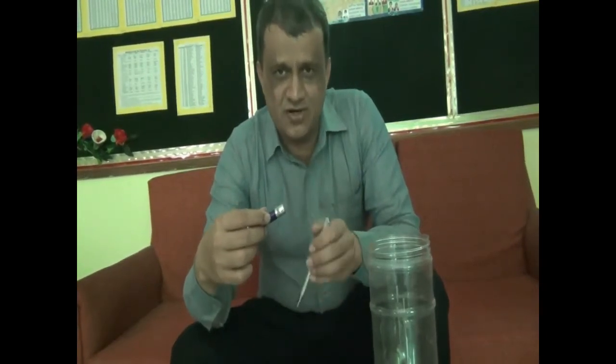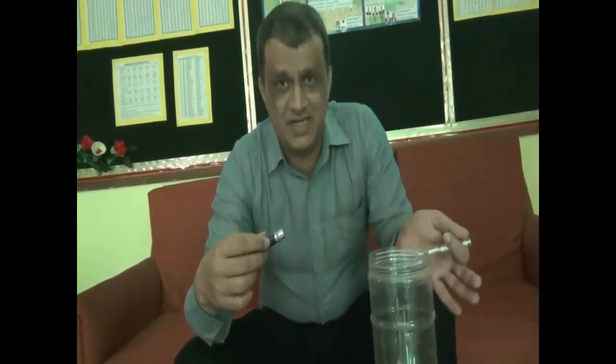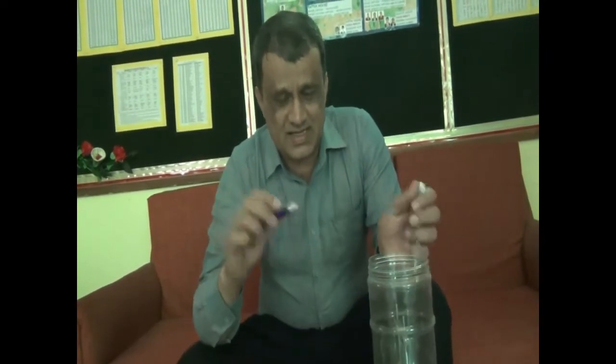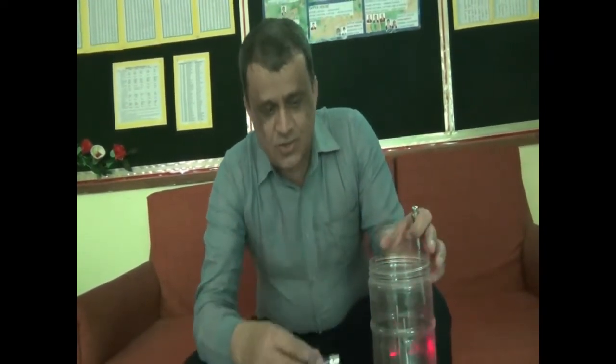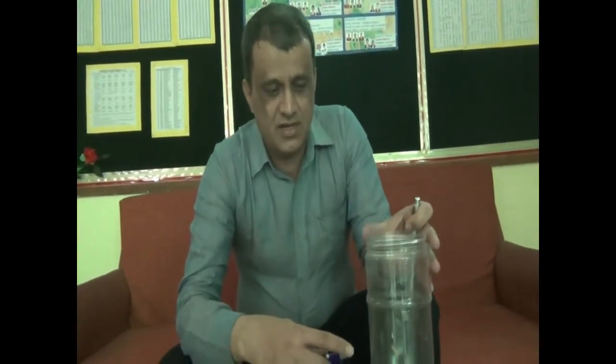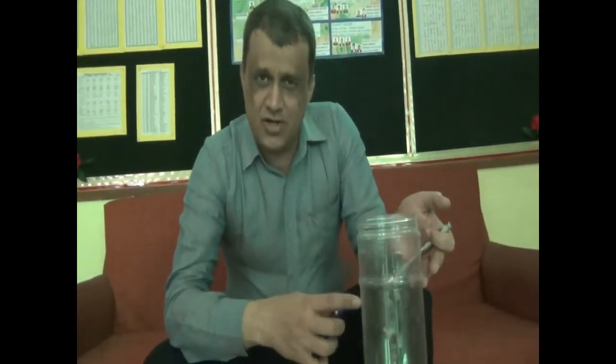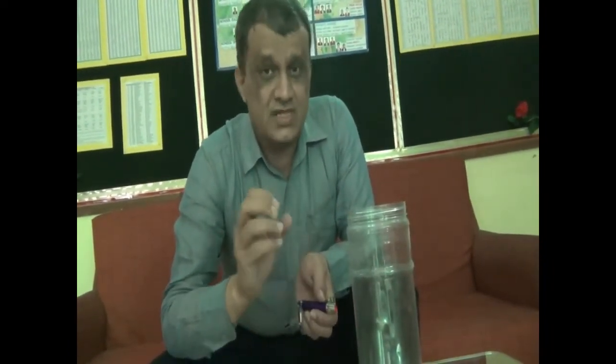A laser light is not visible when it passes through a medium. So if I pass this laser light into this box, I can't see the path of the ray. In this box we have made an arrangement to place a lens or a mirror. We will fill up this box with smoke to see the path of the ray.